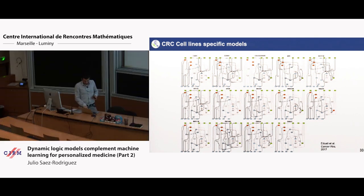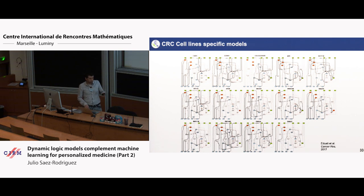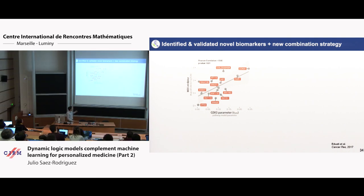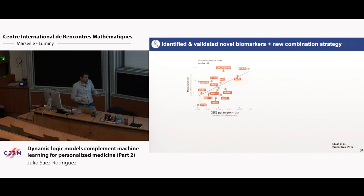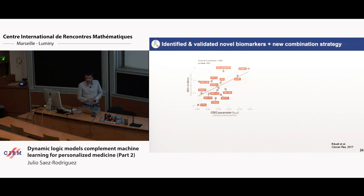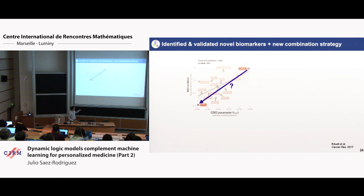Then we tried to see if there is an association between changes in the models across cell lines and drug efficacy. We found a strong association between the activity of GSK3 in the dynamic model — tau is a parameter that tells us how fast this kinase responds to stimulation — and the efficacy of an inhibitor blocking another kinase called MEK in a different pathway. The more active GSK3, the higher the IC50, meaning the less effective the drug.